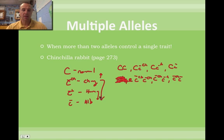Himalayan is dominant to albino but recessive to the others, so there are only two ways you can get Himalayan — c-H paired with little c. Albino, which is the pure white one, there's only one way to get it. So the dominance hierarchy goes from normal down to albino.